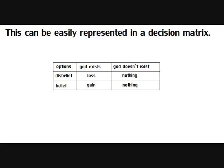This can be easily represented in a decision matrix, which I have supplied. In the decision matrix, you have the two options: belief and disbelief. You have the two other options: God exists or God does not exist, and you have all the possible outcomes. If God exists and you do not believe, you have loss. If God exists and you do believe, you have gain. If God does not exist and you have disbelief, you get nothing, and the same is true if you believe and he does not exist.